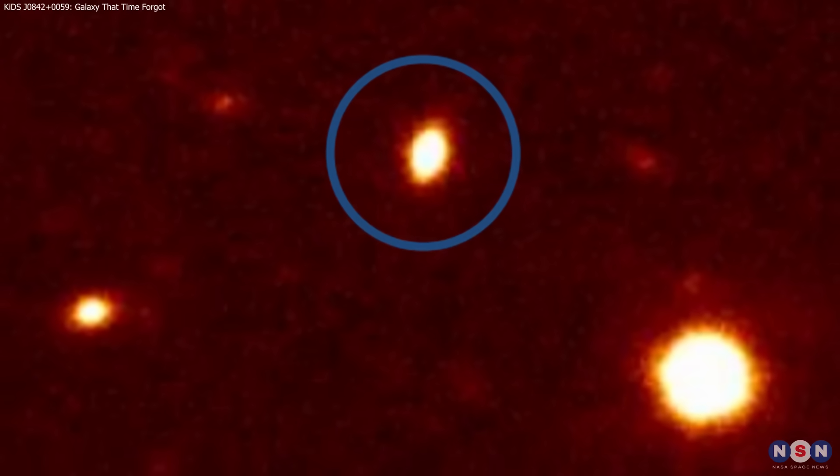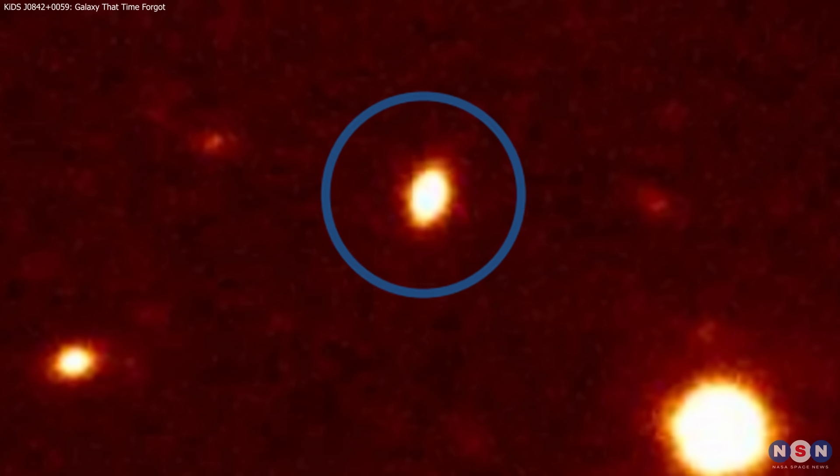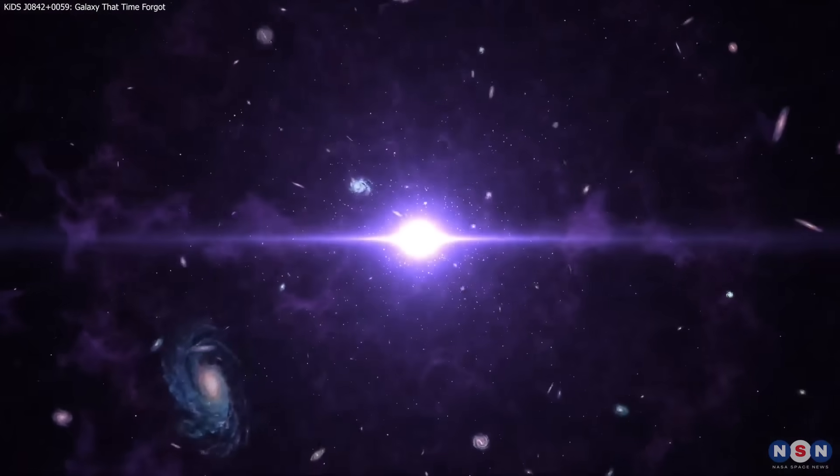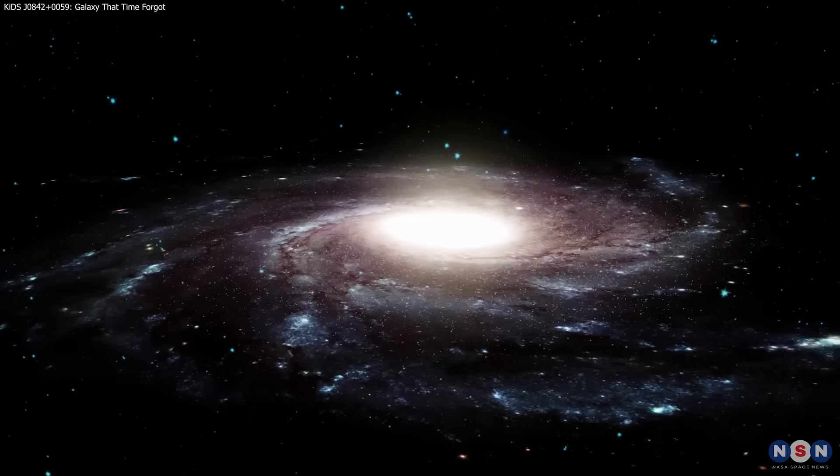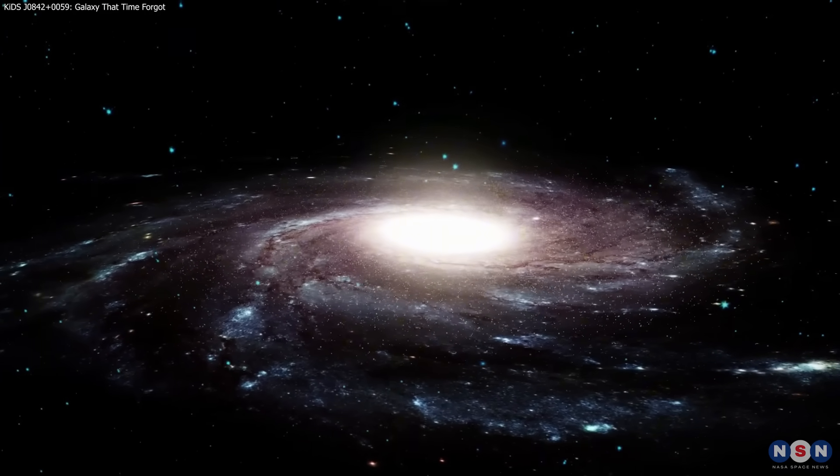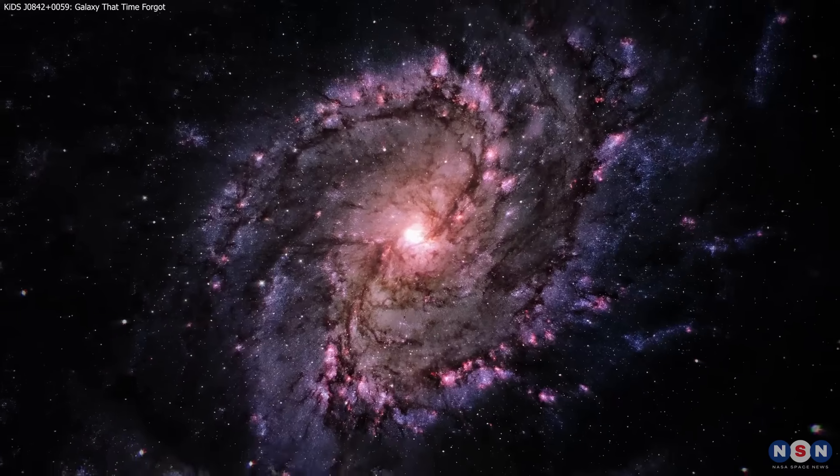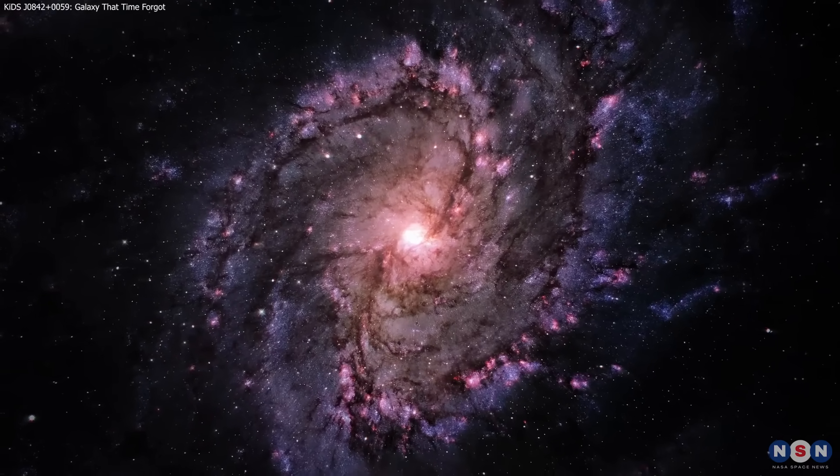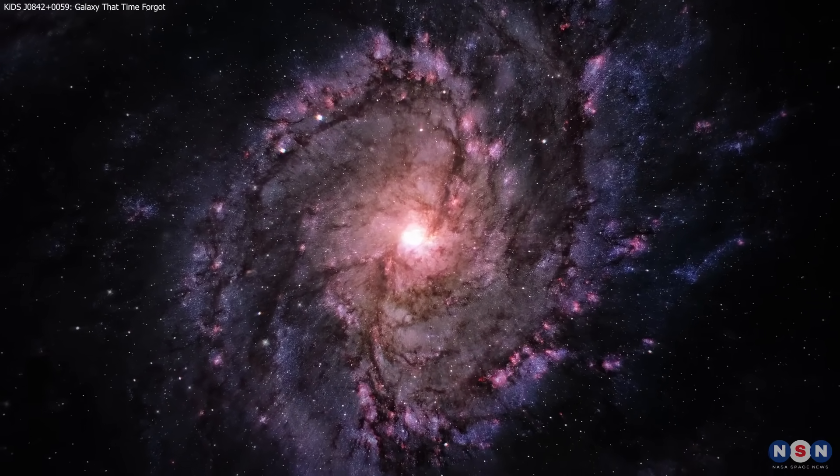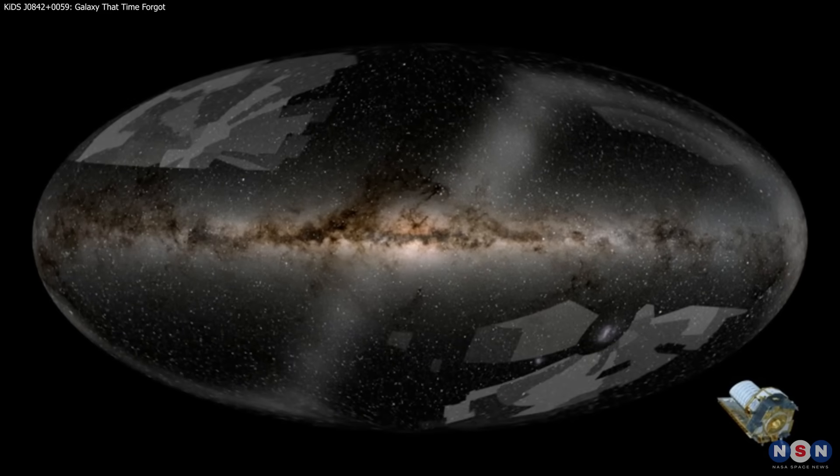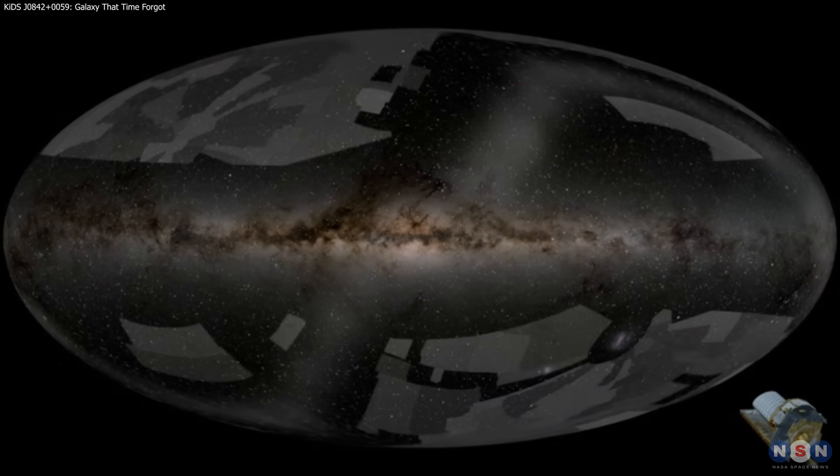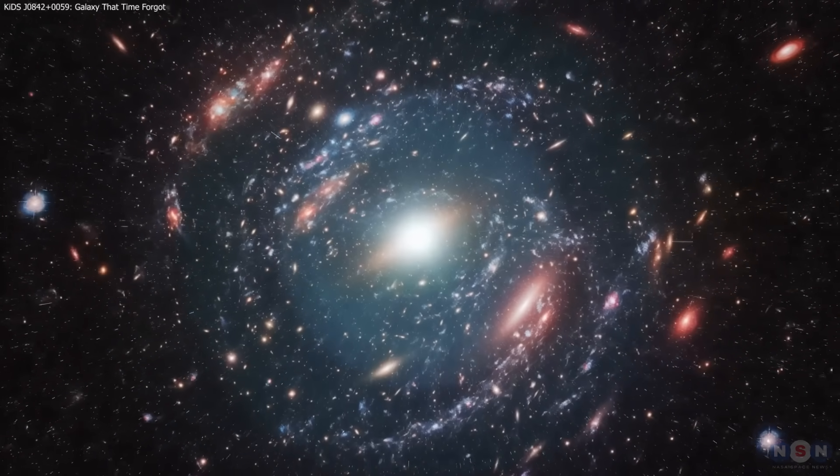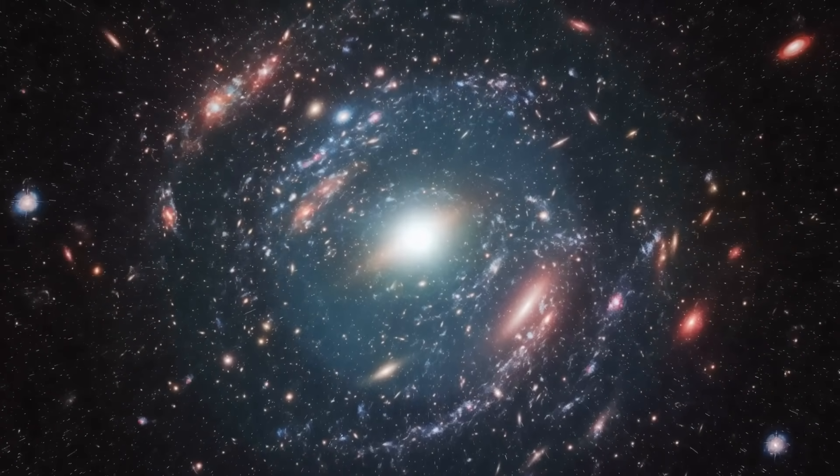The confirmation of KIDS J0842+0059 offers a rare glimpse into the early universe. Unlike most galaxies, it has remained unchanged for billions of years, making it a powerful tool for studying how massive galaxies first formed. As future surveys uncover more fossils like this, they'll help refine our models and bring us closer to understanding how the universe began.